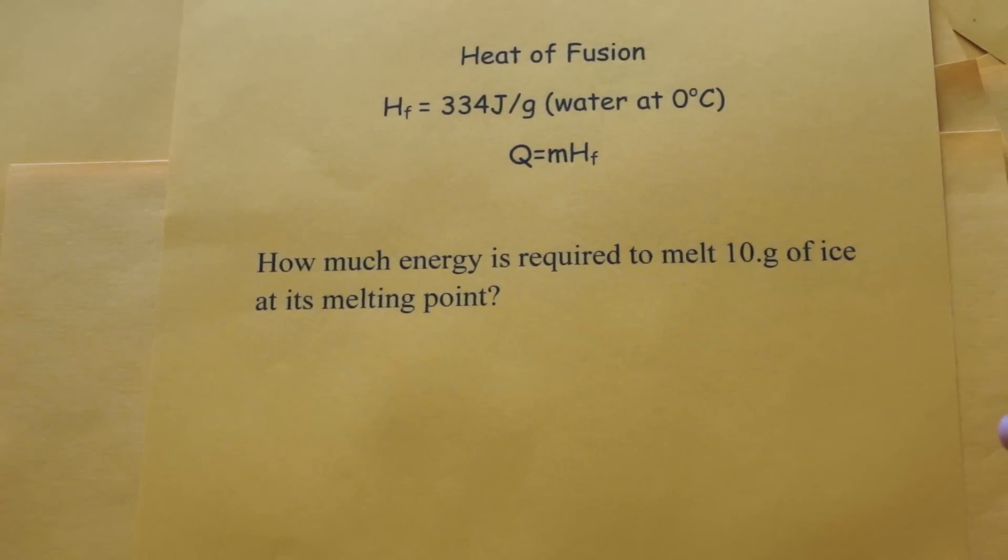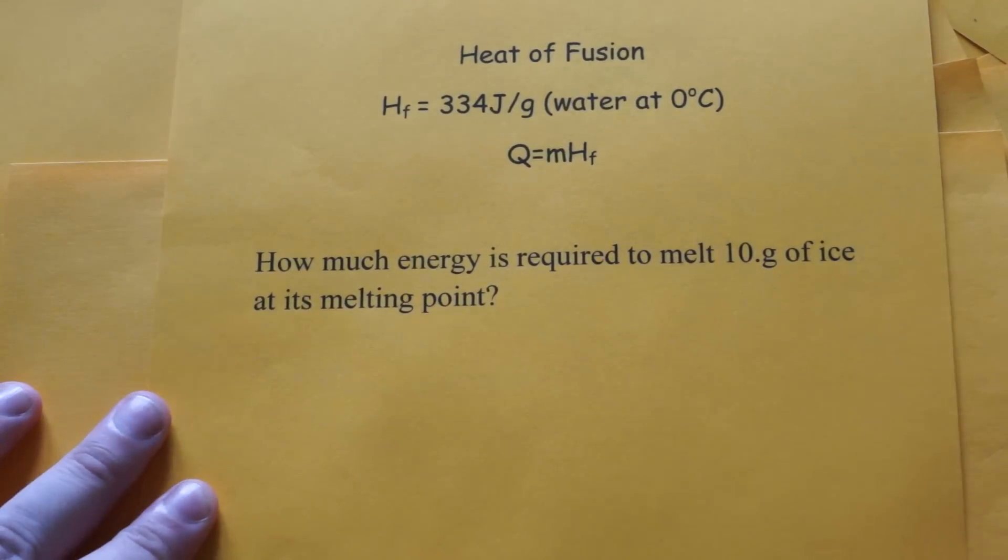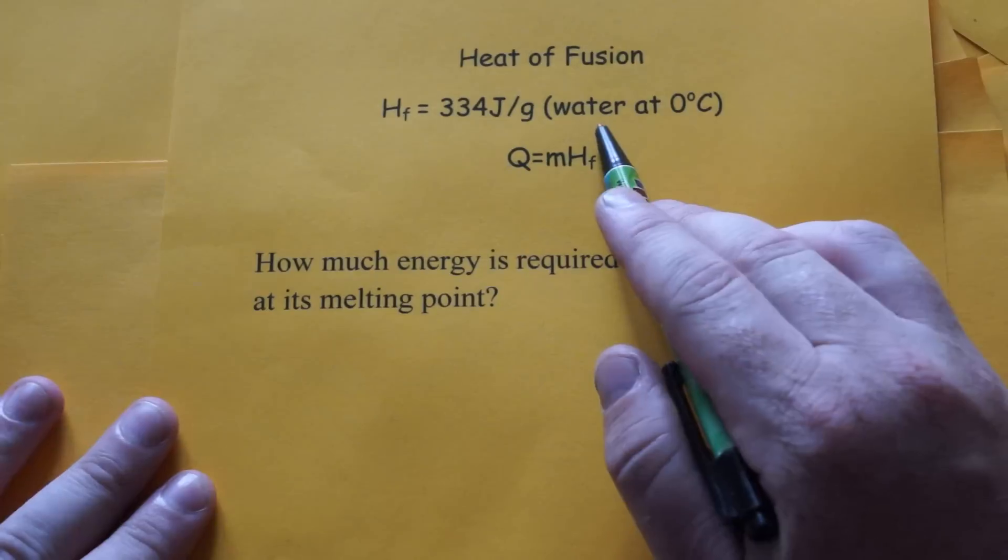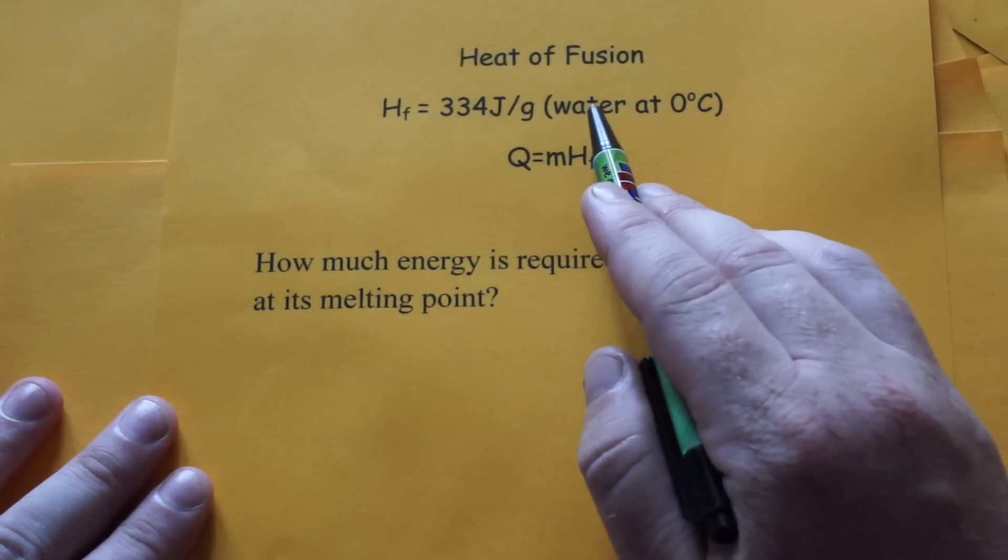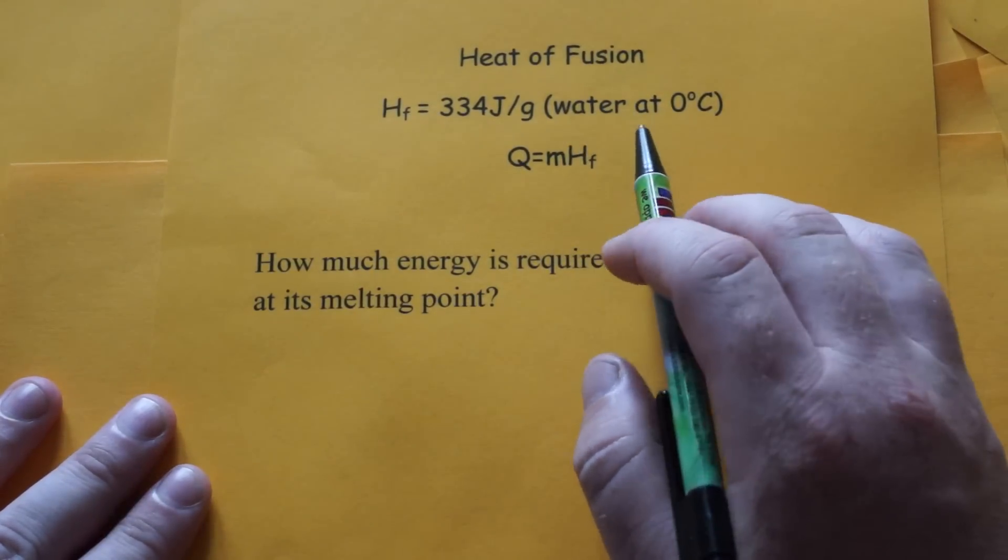This video discusses the heat of fusion equation. The heat of fusion is mostly used for water, which has a value of 334 joules per gram to melt ice into water at zero degrees Celsius.